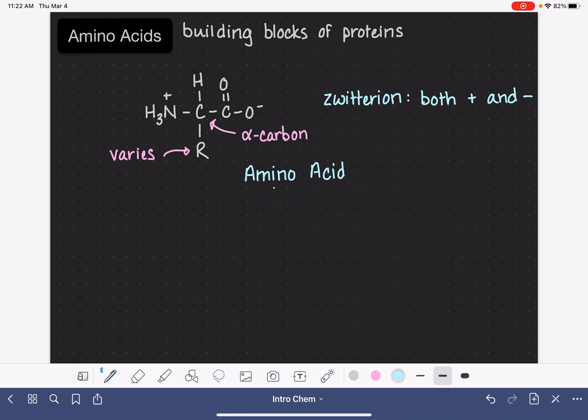So the amino acids' first division, so the first way that they're divided among each other, is whether they are non-polar or polar. A non-polar amino acid, for a non-polar amino acid,